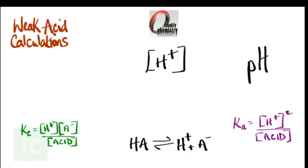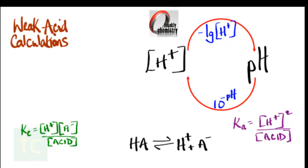So how do we get the pH of the acid from the hydrogen ion concentration? The pH is the negative log of the concentration of hydrogen ions. And if we have the pH, how would we get the concentration of hydrogen ions? We need to take the inverse log of the pH, or 10 to the power of minus the pH.